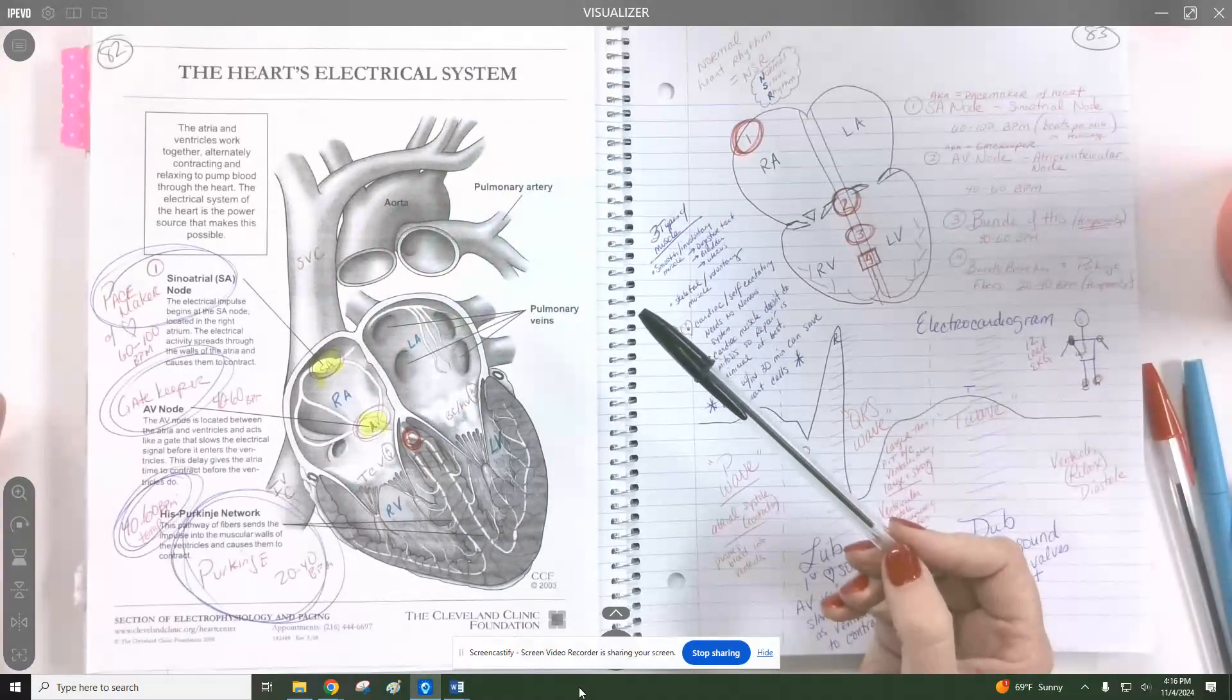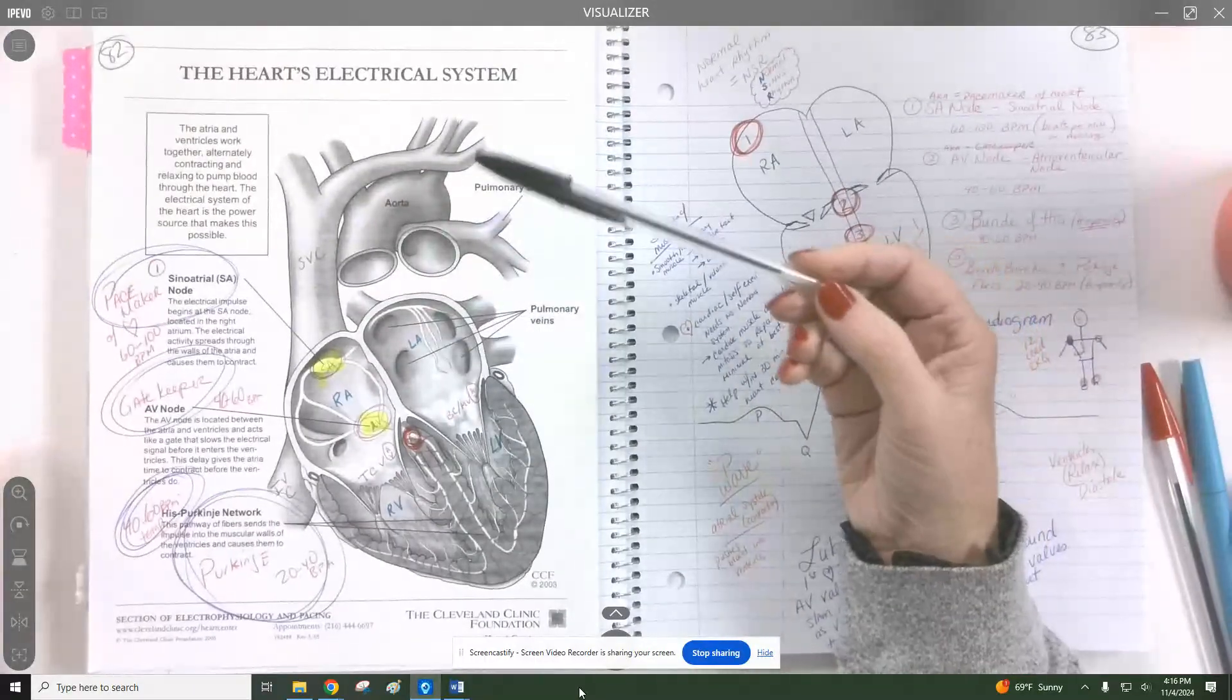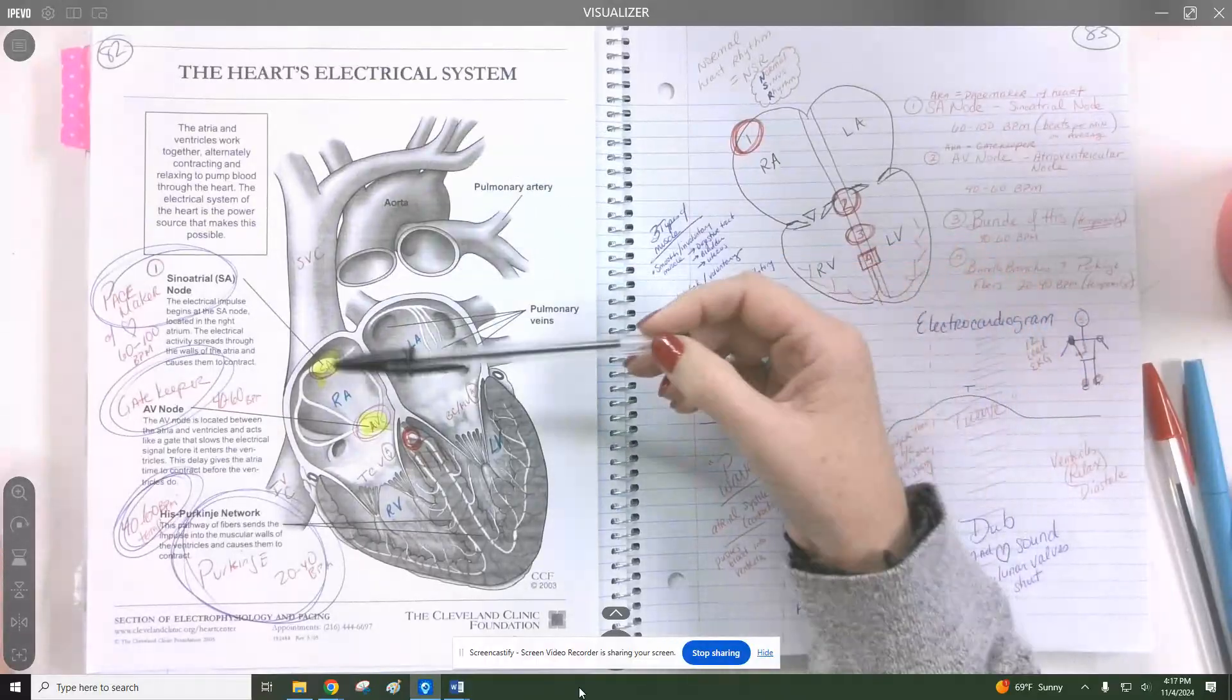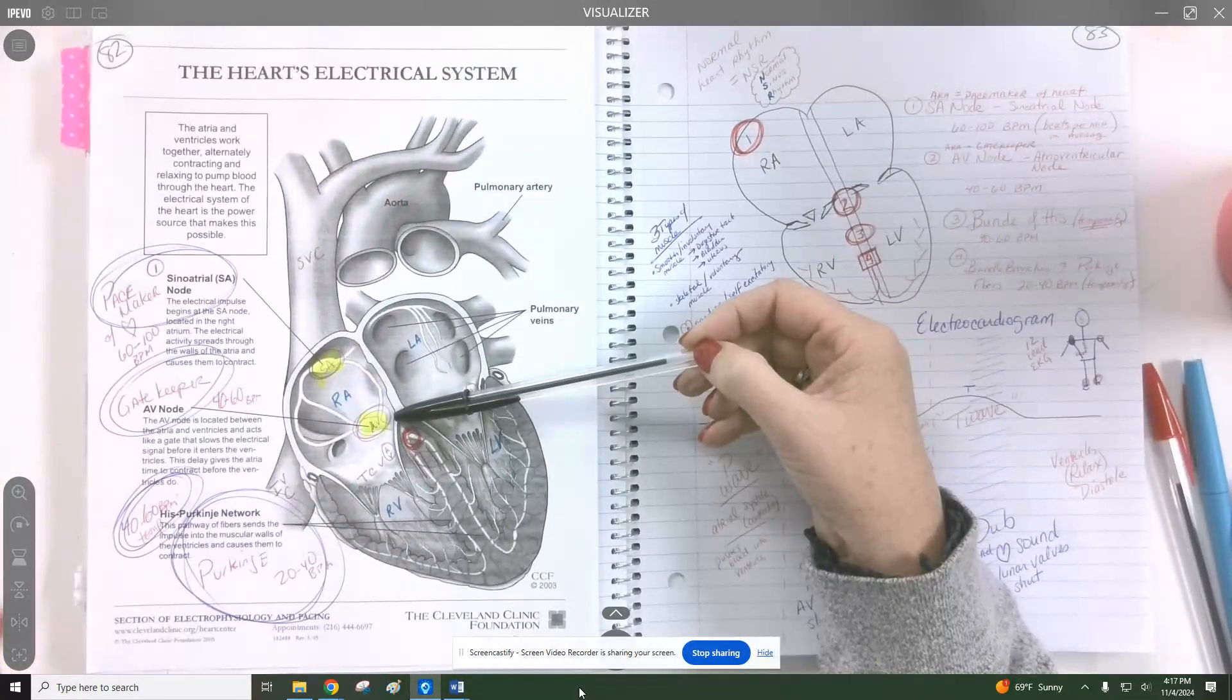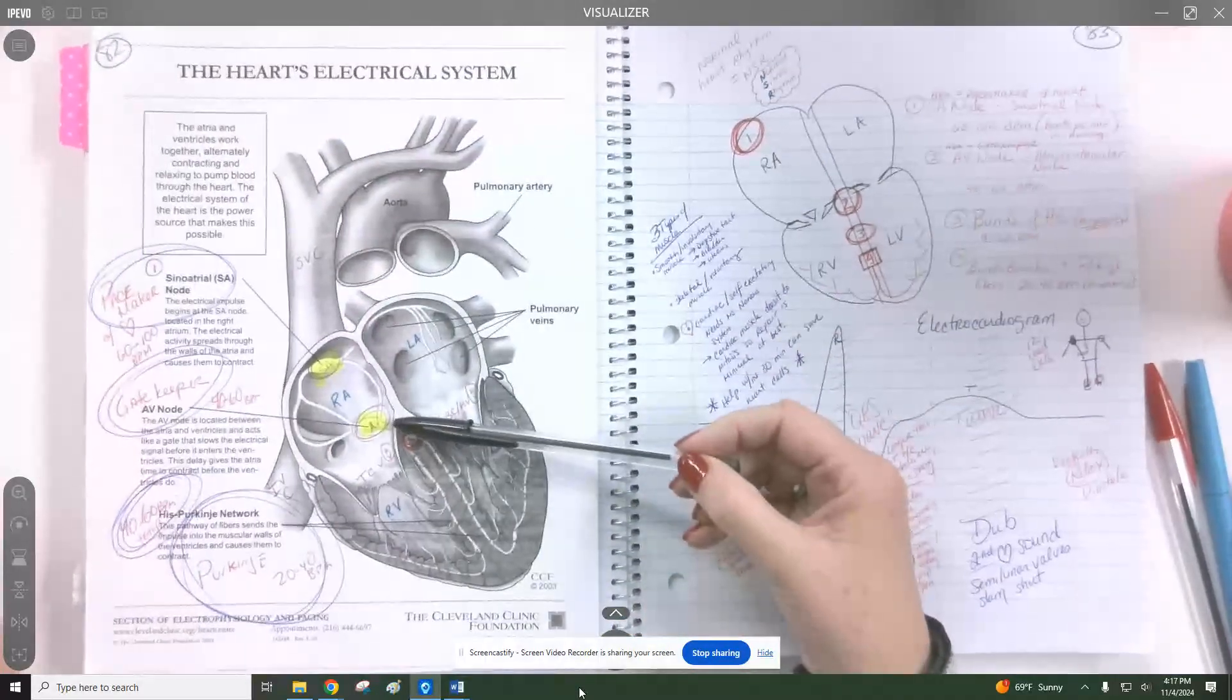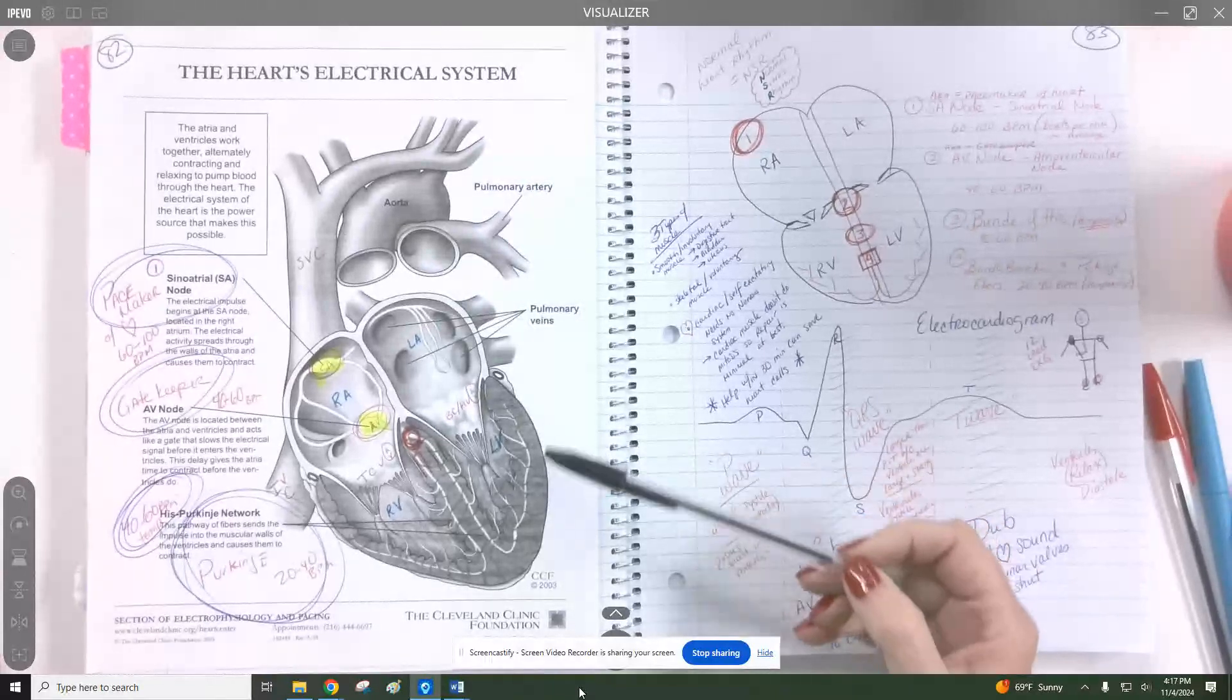However, if that SA node is not able to do its function, it has backups, multiple backups. However, typically when the heart is working well, the SA node will fire, triggering an AV node to also then fire moments after. Then there's a little bit of a delay so that all of the lower or ventricular nodes can illuminate and then they will contract.